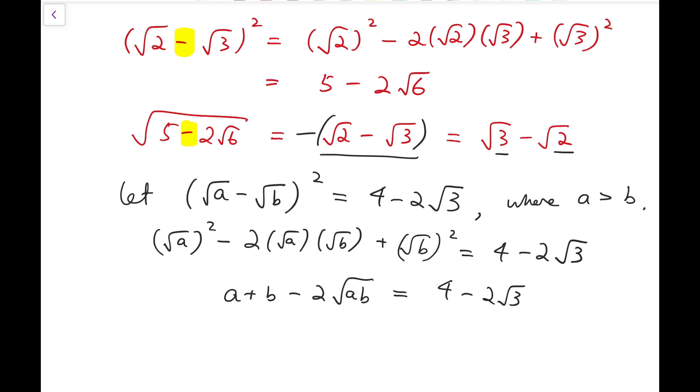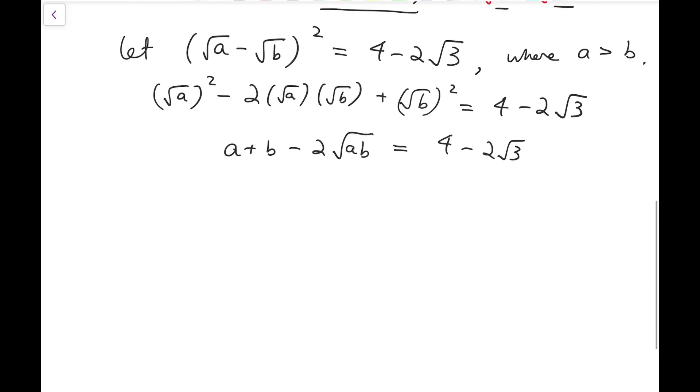Now notice that whenever I solve for one solution for a and b, then I'm actually done because I've managed to find the unique positive number, so that when it's squared, it's equal to 4 minus 2 times root 3. So I can boldly claim that I can solve for a solution where a plus b equals to 4.